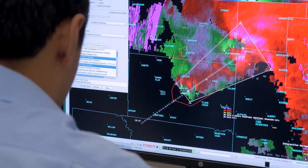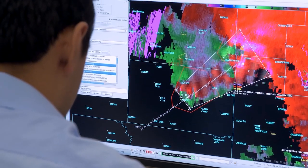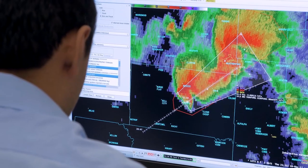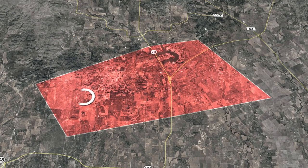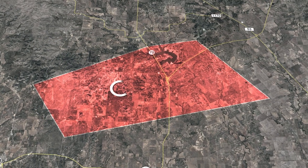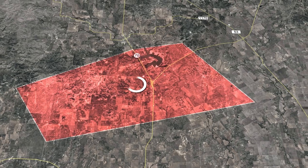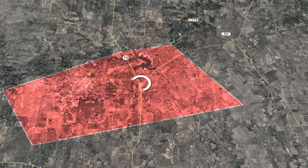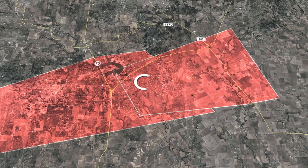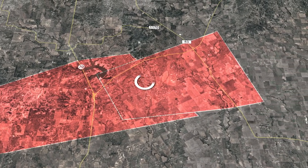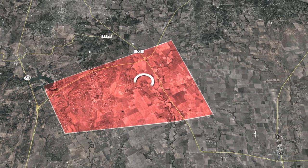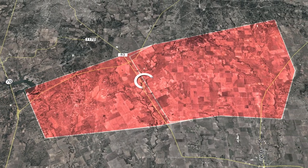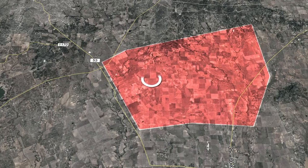Let's take a look at how tornado warnings are currently issued. A warning polygon is added to alert those in harm's way. As the storm gets closer to the edge of the polygon, a new warning is issued. Once the storm has passed, the old warning goes away. This process is repeated for the life of the storm.